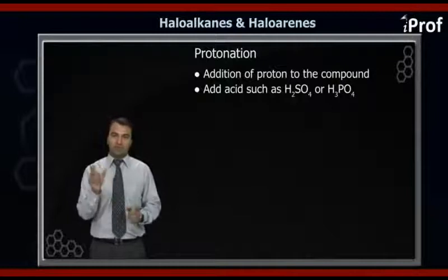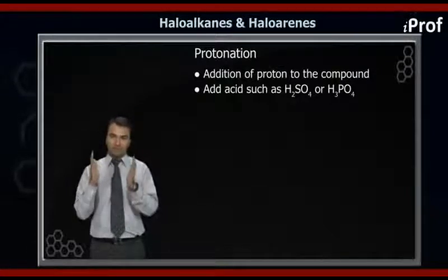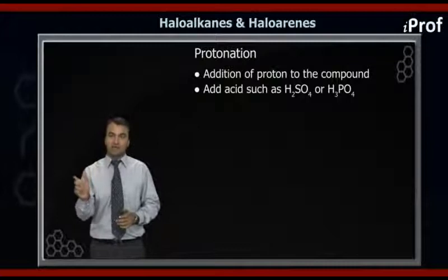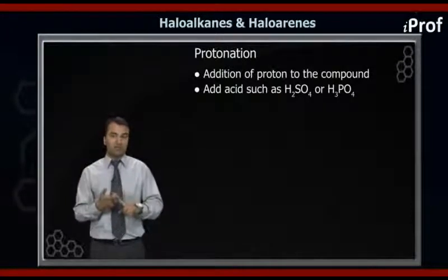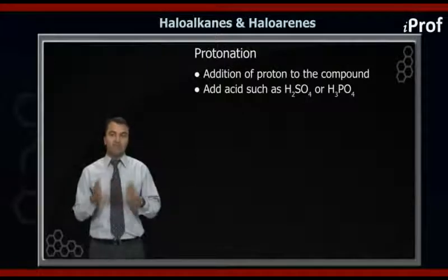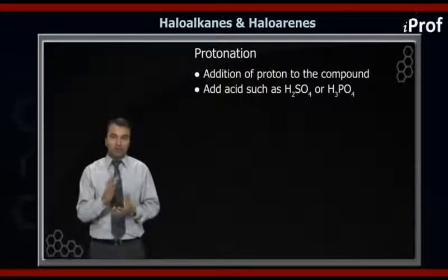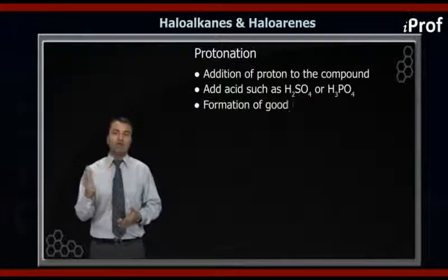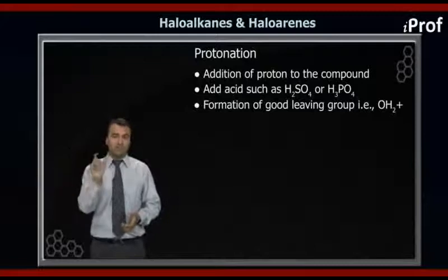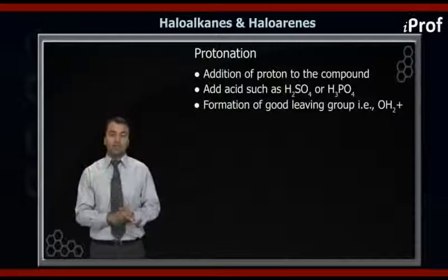Briefly, first a protonation takes place — that is, H+ from the acid, which would be either H2SO4 or HCl. After the protonation, the alcohol forms an OH2+ group. This OH2+ group is a very good leaving group. Once the leaving group is formed, the elimination reaction starts.